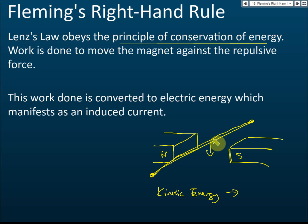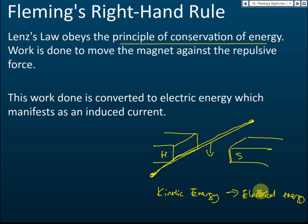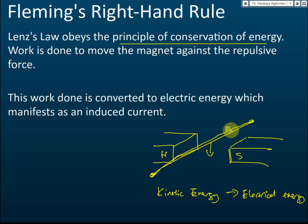When we use this conductor to cut the magnetic field, electric current is induced — meaning electric current is produced. So when electric current is produced, the energy is converted from kinetic energy to electrical energy. Therefore the kinetic energy must reduce, which means the conductor must slow down.